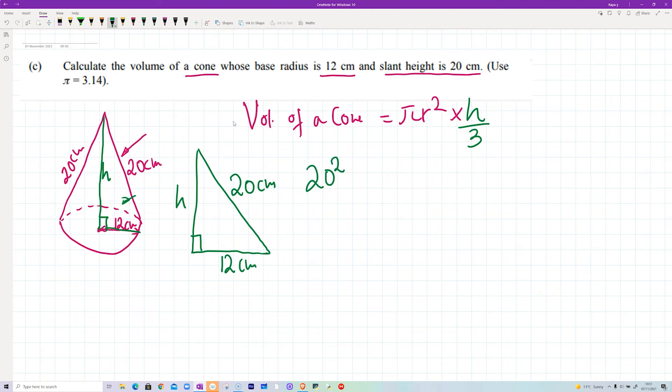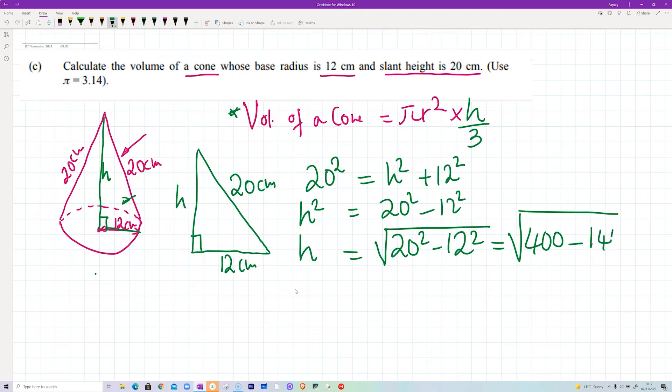If you do 20 squared, it's going to be equal to h squared plus 12 squared. So to get h, you need to square root on both sides. So you're going to get square root of 20 squared minus 12 squared. This is going to be equal to square root of 20 is 400, take away square of 12 is 144. So this is going to give you the square root of 400 take away 144 is 256, which is going to be equal to 16. So now we have our vertical height, then we can find the volume.